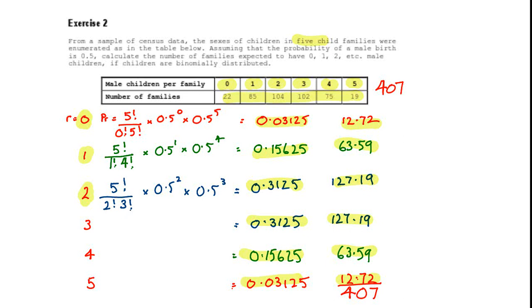This exercise asks us to go back to exercise 2 and actually test the null hypothesis that the observed numbers of families 22, 85, 104, 102 and so on equal the expected numbers of families. So what we need to do here is simply calculate